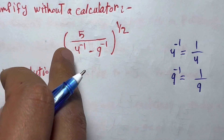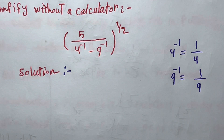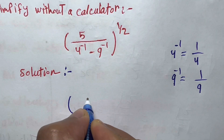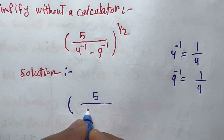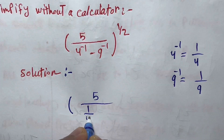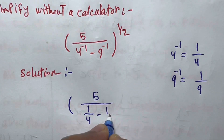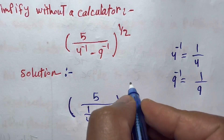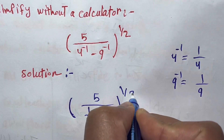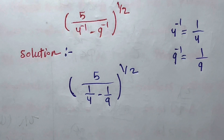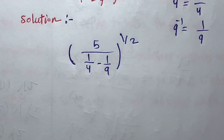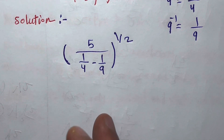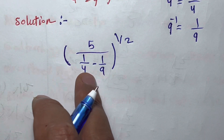So we rewrite the expression with positive exponents: five over one over four minus one over nine, all raised to the power of one over two. That is the first step — rewriting the negative exponents as positive.